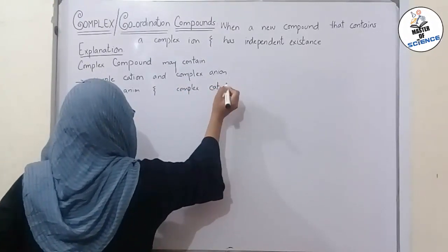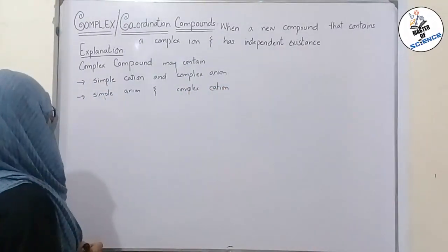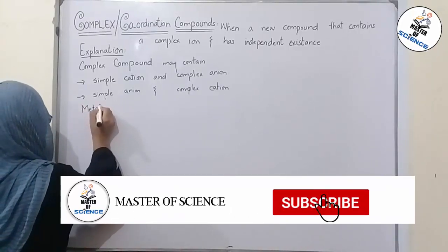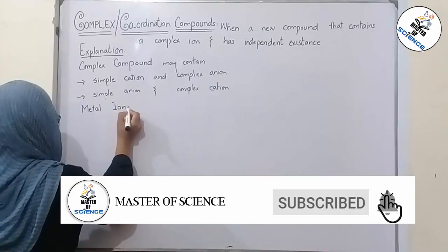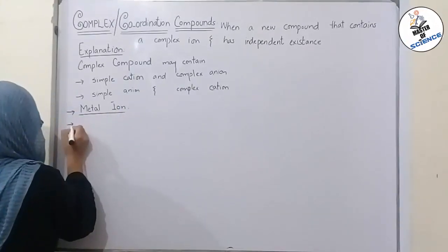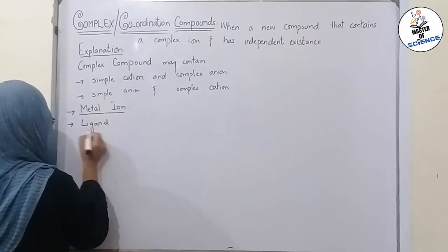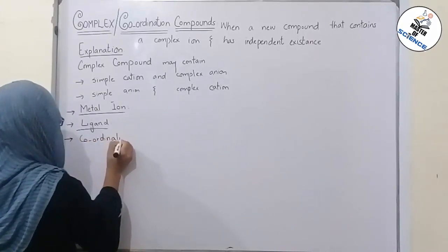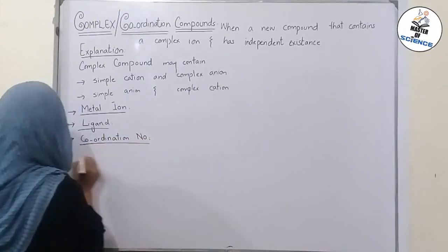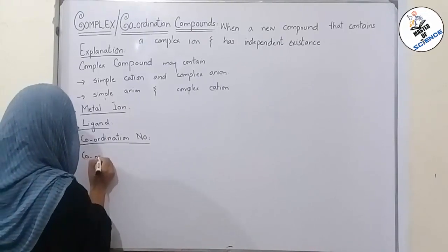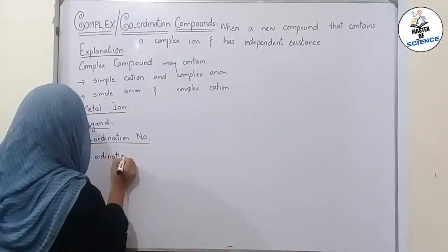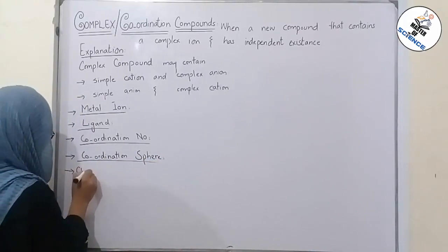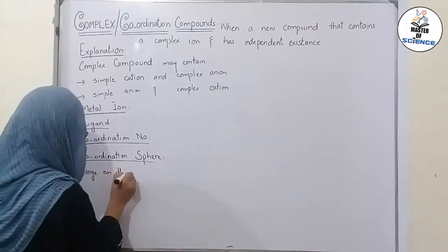Different terms are used in coordination compounds. First, the metal ion is also called the central metal ion. Second is ligand. Third is coordination number. Fourth is coordination sphere. Fifth is charge on the coordination sphere.